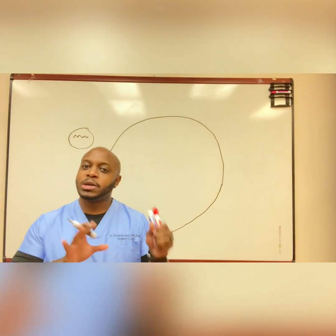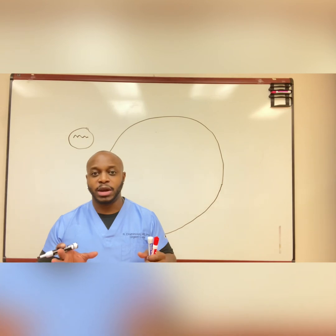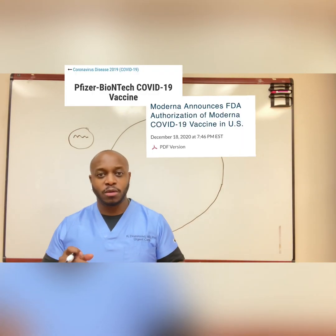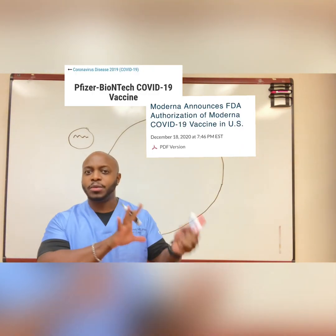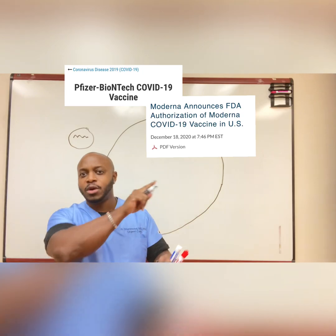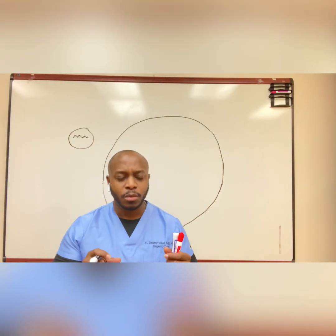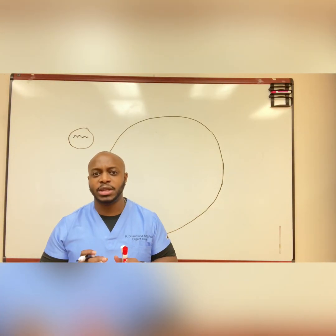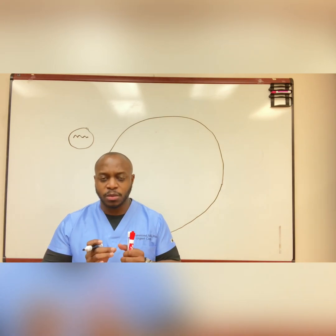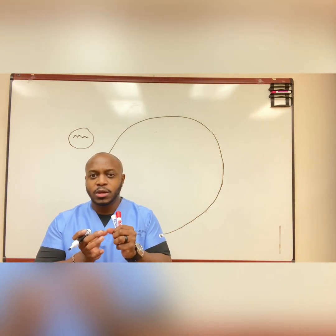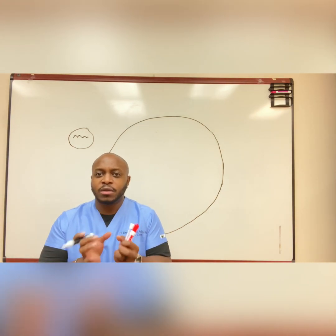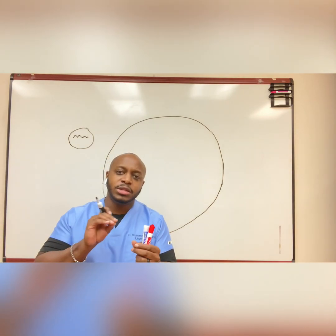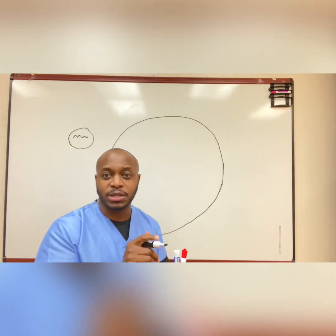I've already talked about the successful vaccines — the Pfizer vaccine, the Moderna vaccine — both mRNA vaccines and what happens there. In the Australian vaccine, what they wanted to do is basically take pieces of SARS-CoV-2, but they added in something to try to stabilize the vaccine.